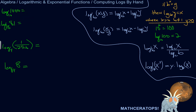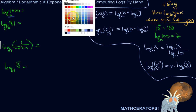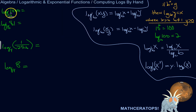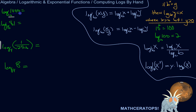Starting on a really basic level: log base 10 of 1,000. You don't need to grab the calculator for that one. Just think about what the log function is asking: to what power do I have to raise this base in order to turn it into 1,000? Well, 10 to the third is a one with three zeros behind it. So the answer is 3 — I raise 10 to the power of 3 to get 1,000.